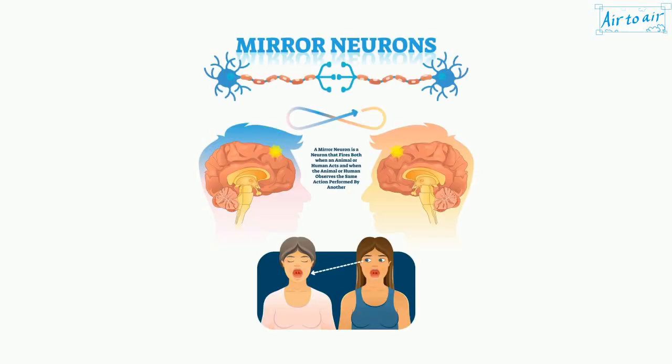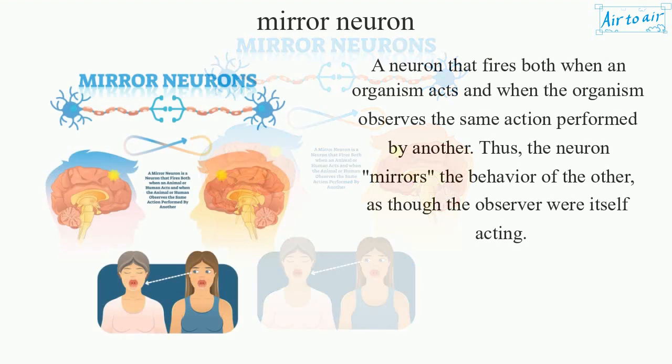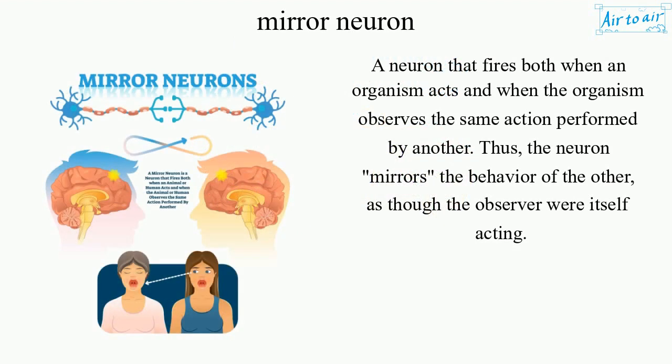Mirror Neuron: a neuron that fires both when an organism acts and when the organism observes the same action performed by another. Thus, the neuron mirrors the behavior of the other, as though the observer were itself acting.